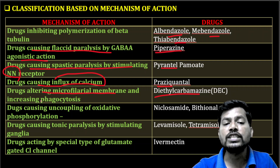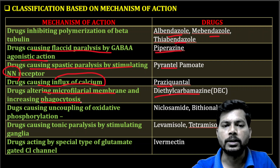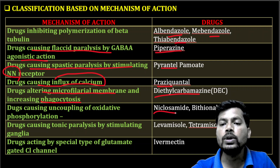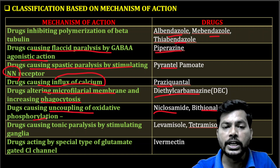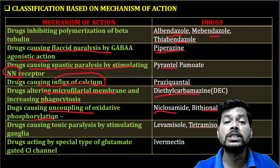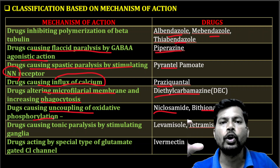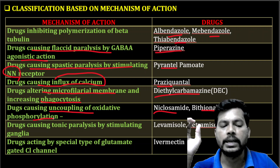Next, diethylcarbamazine citrate alters the microfilarial membrane and increases phagocytosis of the worms. Next, niclosamide and bithionol are drugs that cause uncoupling of oxidative phosphorylation and inhibit the electron transport chain in the mitochondria of the worm, thereby decreasing the energy source.